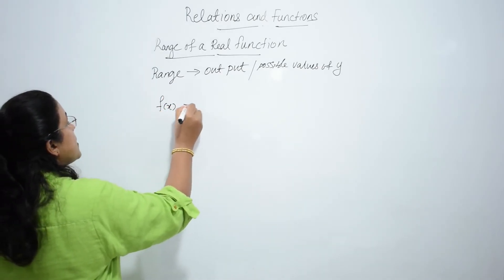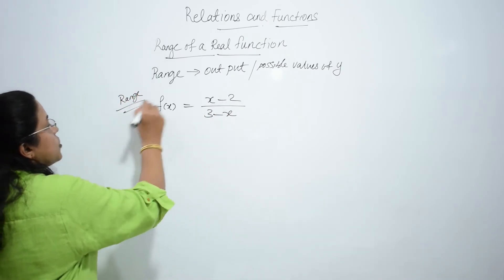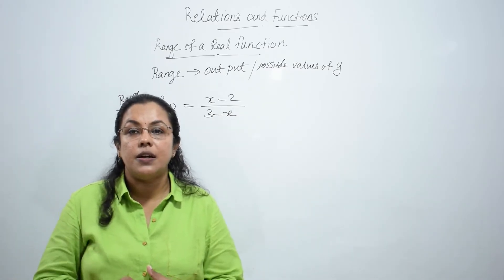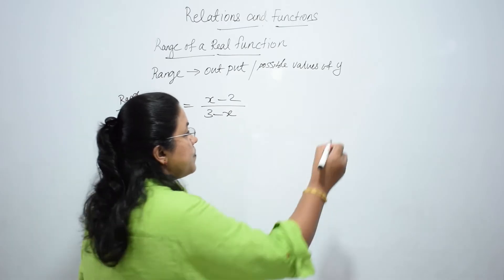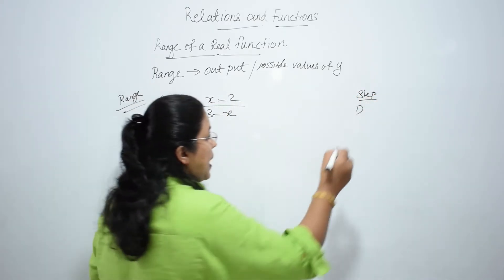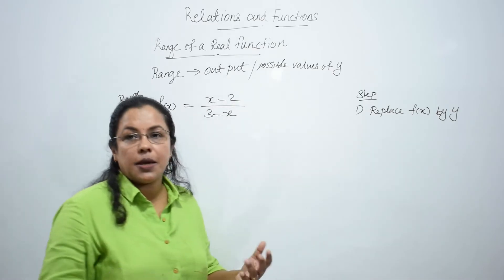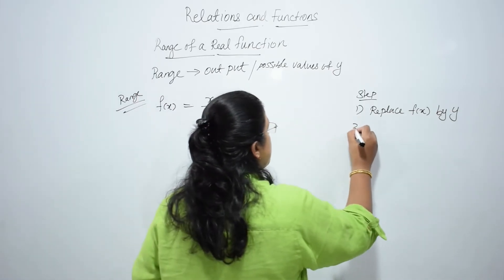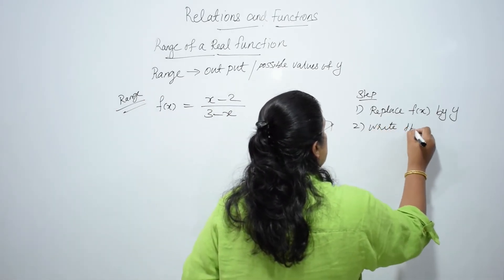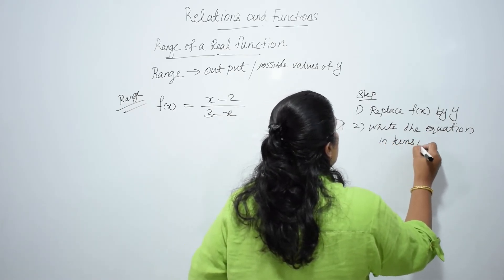Consider the question: find the range of f(x) = (x - 2)/(3 - x). We cannot find the range directly here, so we have to follow some steps. Step 1: replace f(x) by y. Step 2: write the whole equation in terms of x.